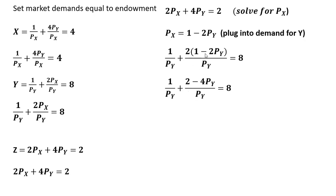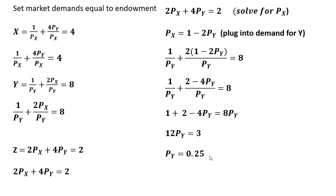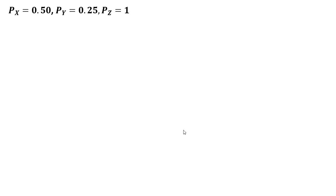Expanding: 2 times 1 and 2 times minus 2 times the price of good y gives us a simplified expression. Multiplying everything through by the price of good y, and then adding 4 times the price of good y to both sides, we see that the price of good y is 3 divided by 12, or 0.25. Taking this 0.25 for the price of good y and plugging it back in, we find the price of good x is 0.5. So our normalized prices are: price of good z equals 1, price of good x equals 0.5, and price of good y equals 0.25.